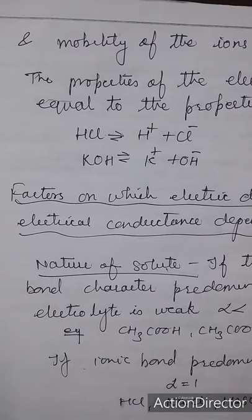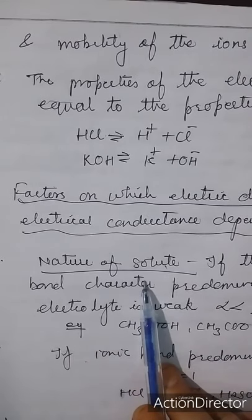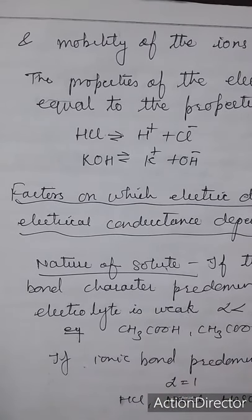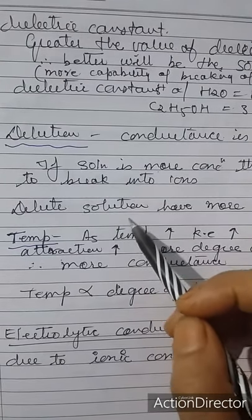The properties of the electrolyte are equal to the properties of its ions. For example, HCl dissociates into H+ and Cl−, and KOH dissociates into K+ and OH−. The degree of ionization depends firstly on the nature of the solute. If covalent character predominates, the electrolyte is weak and alpha will be less than one — as in acetic acid, sodium acetate, and HCN.